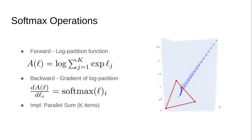There are two key mathematical properties to know about the softmax. The first is the log partition function, used in the forward pass of the algorithm. We'll annotate this function as A, written as simply the log of the denominator of the previous projection. To compute the gradient for the backwards pass, we take a derivative with respect to each input dimension. It turns out these derivatives are just the same as the softmax for each value, telling us that the key computation for anything related to softmax is simply this log partition function A.